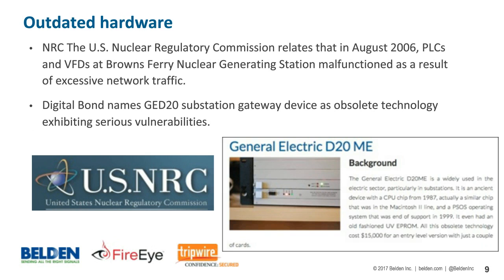Number one: outdated hardware. What do we mean? We're talking about things that are really old. In your plants, lots of old things exist, but many times we don't take time to process what that means for the reliability of that control network. Two examples: the U.S. Nuclear Regulatory Commission relates that in August 2006 — over ten years ago — PLCs and variable frequency drives at Brown's Ferry malfunctioned as a result of what they termed excessive network traffic. In today's world, modern processors can handle far more packets per second than older equipment. The second example: DigitalBond likes to point to the GE D20 substation automation gateway, which is still sold today but has the same generation processor used in the Mac OS/2.